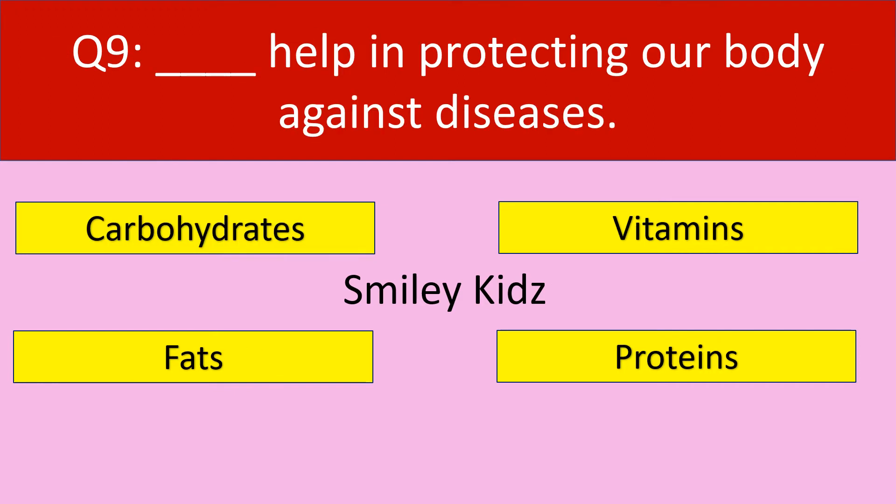Question number 9. What helps in protecting our body against diseases? Options are: carbohydrates, vitamins, fats, and proteins.